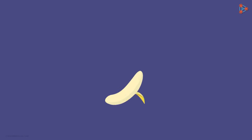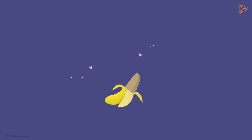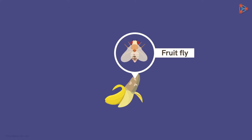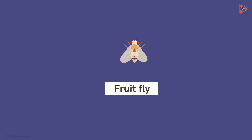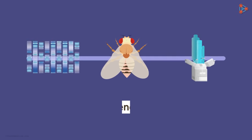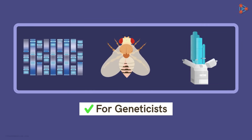What happens when you keep a peeled banana out in the open? The banana gradually deteriorates and we find several tiny creatures hovering over it. These tiny creatures are commonly called fruit flies. They are annoying, right? But did you know that these small wonders are one of the most powerful tools for geneticists?